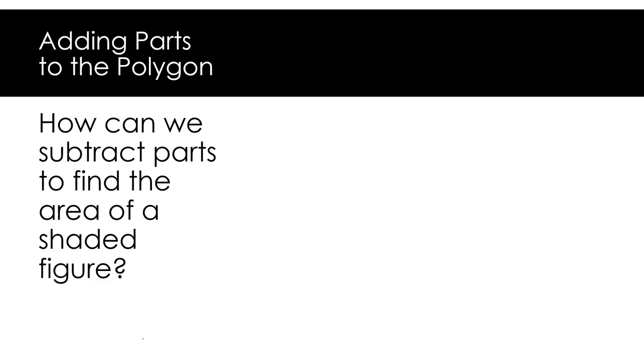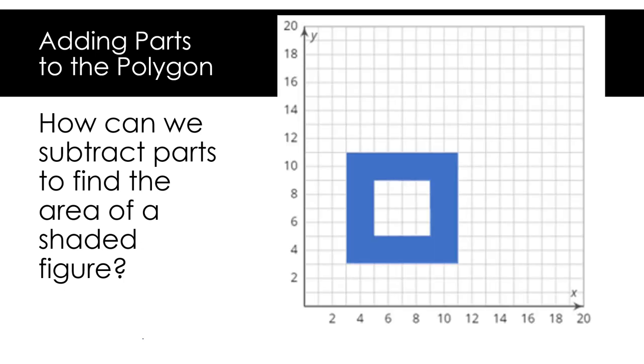Let's think about how we can subtract parts to find the area of a shaded figure. To find the area of the blue shape, we must first find the area of the blue shape and white square in the center combined. Next, we will count the length of each side of the figure to determine the area of the whole figure. We can see that this side of the polygon has a length of 8 units. This side of the polygon also has a length of 8 units. The polygon is a square with side lengths of 8 units. To find the area of a square, I can use the formula area equals side squared. So, 8 squared is 64 square units.